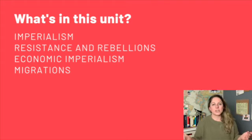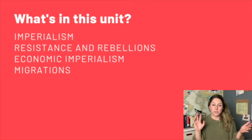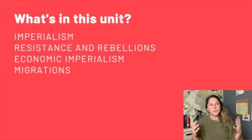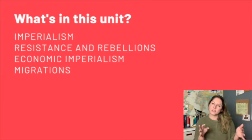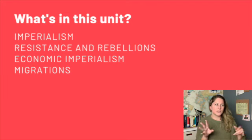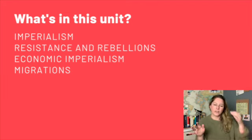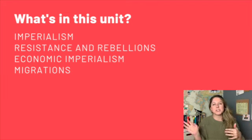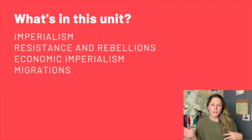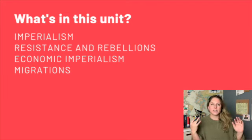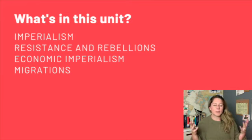One thing to make sure is that your kids understand that Unit 5 and Unit 6 are talking about the same time period. If you want to explain it to kids, Unit 5 is a little bit more about the first half — you're talking 1750 to about 1825 with all the different revolutions — and then Unit 6 is focusing a little bit more on the second half.